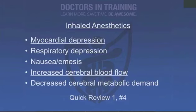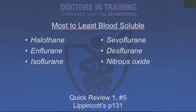What are some effects of inhaled anesthetics? We get myocardial depression, respiratory depression, nausea, emesis, increased cerebral blood flow, and decreased cerebral metabolic demand. Rank the following inhaled anesthetics in terms of blood solubility from most to least soluble: halothane, enflurane, isoflurane, sevoflurane, desflurane, and then the least soluble — nitrous oxide. More blood soluble means slower induction; less blood soluble means rapid induction.